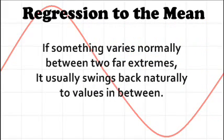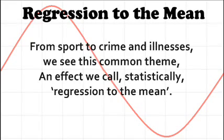If something varies normally between two far extremes, it usually swings back naturally to values in between. From sports to crime and illnesses, we see this common theme, an effect we call statistically regression to the mean.